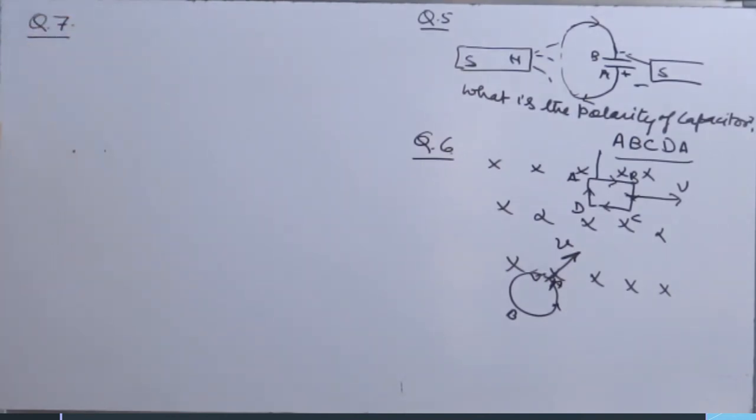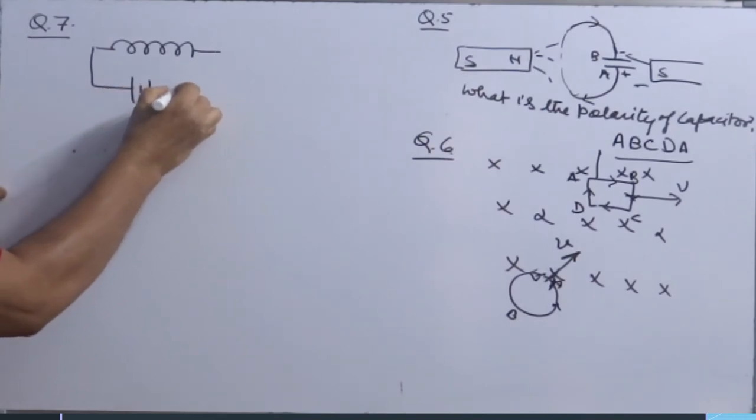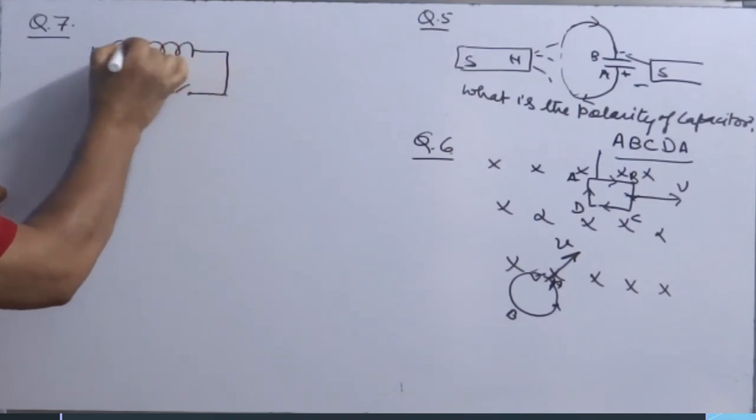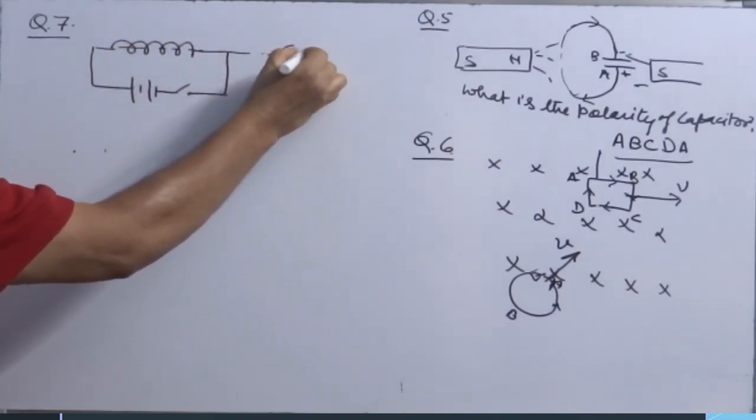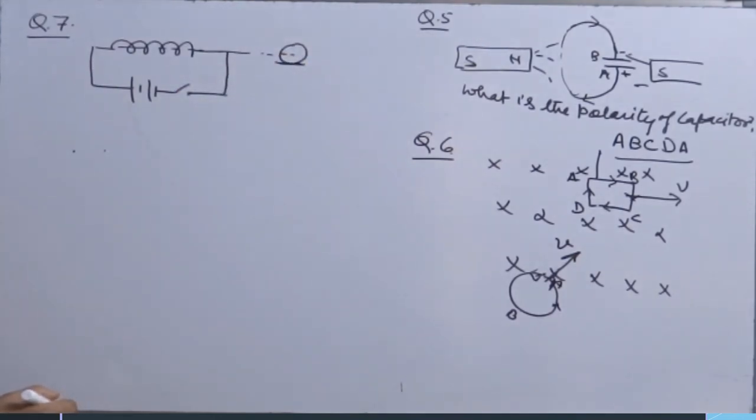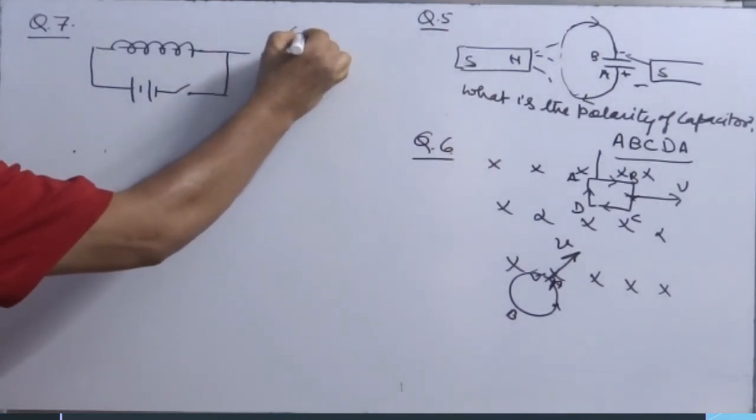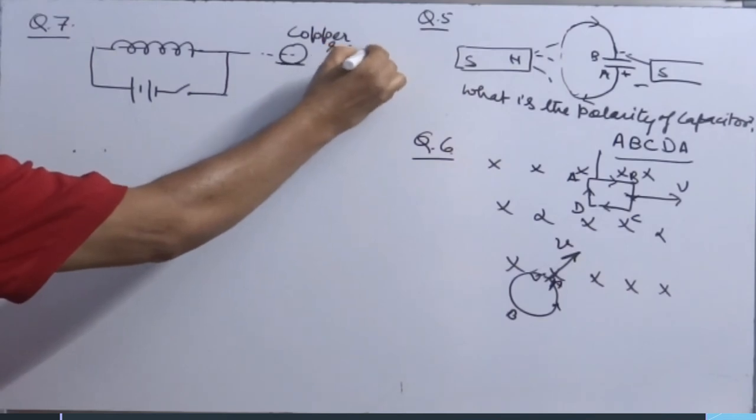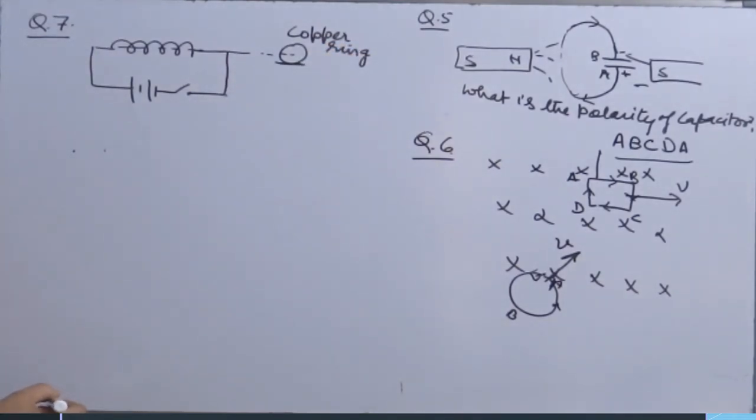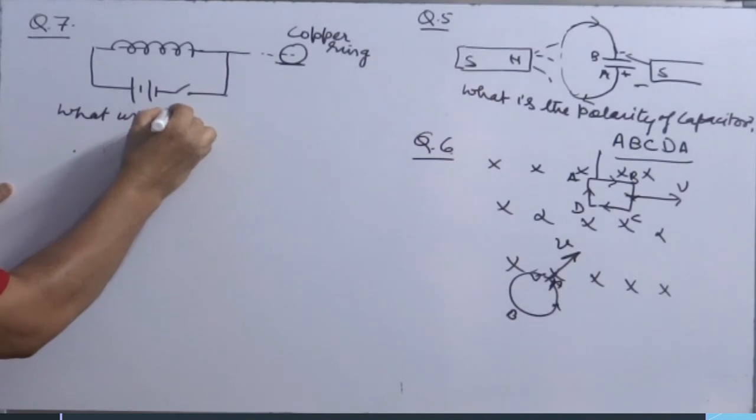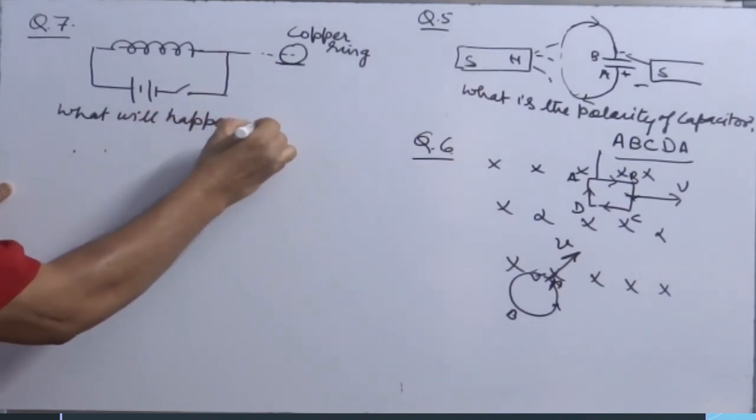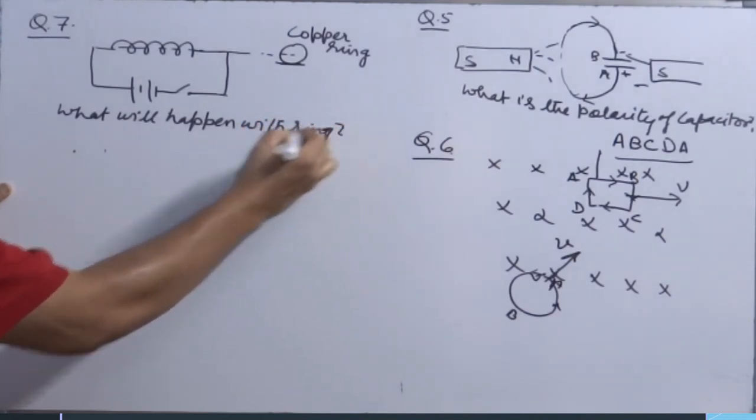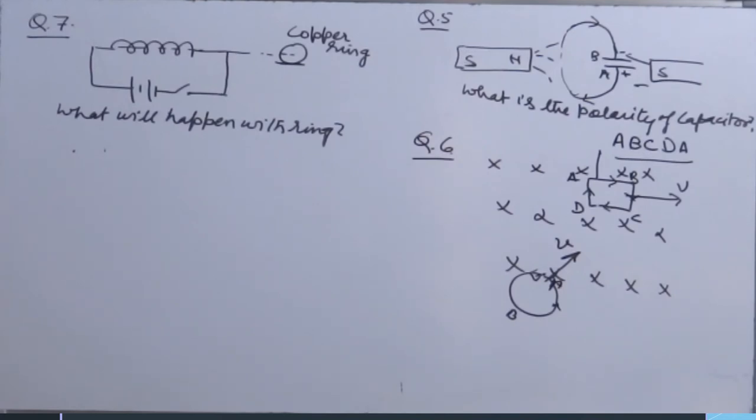Question 7. There is a coil, inductor coil attached with the battery and key. In the same line of this, there is a ring placed with center coinciding. This is a copper ring. Question is, what will happen with the ring? Nothing, it will move. How? Now, question arises, where will it move?